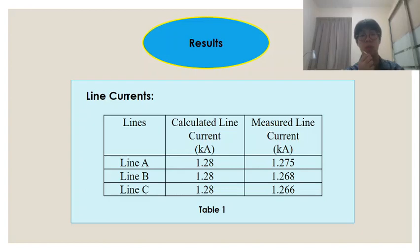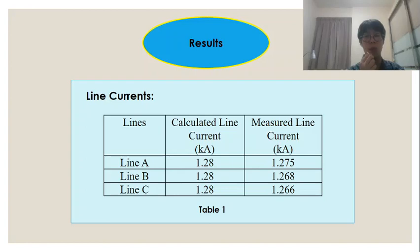These are the results for my project. Table 1 shows the calculated and measured values for the line currents in kiloamperes. The measured value of the line current in line A is 1.275 kA, and the measured value for line B is 1.268 kA.